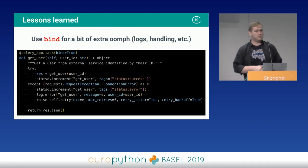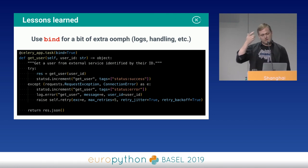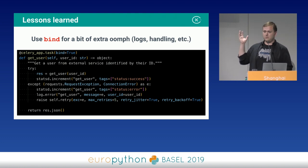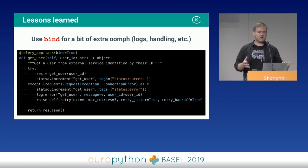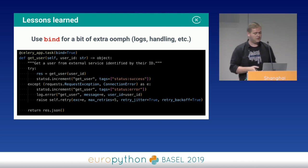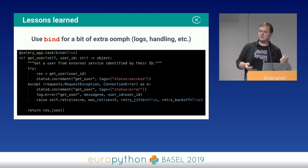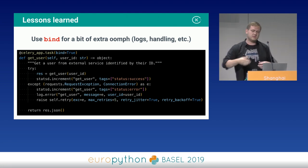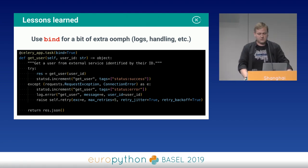Use bind for extra capability in your task — it gives you a reference to the task itself so you can log more and retry with contextual info. For example, if you have a network error, retry five more times; but if you have an integrity error, just log it and give up because it's a data fault, not an API fault. We log to stdout and use Datadog to get task success stats quite easily.